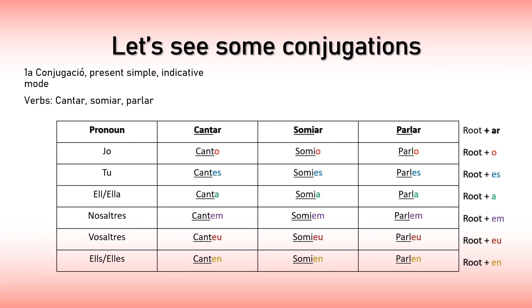Let's see some examples for each conjugation. For the first one — ending with AR — we have cantar (to sing), somiar (to dream), and parlar (to talk). Notice how part of the words at the top of the table is underlined; this underlined part is the root. The root for regular verbs remains unchanged when you conjugate them. For example, for parlar: jo parlo, tu parles, ell/ella parla, nosaltres parlem, vosaltres parleu, ells/elles parlen.